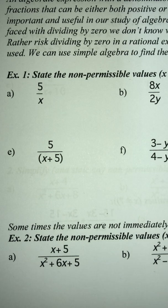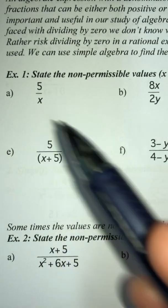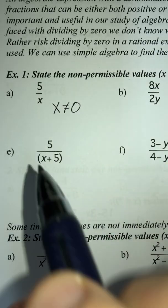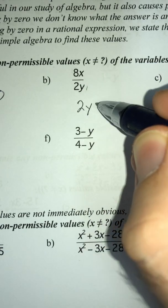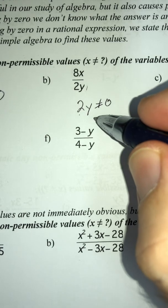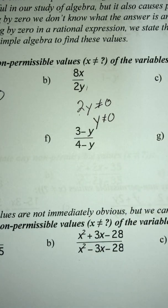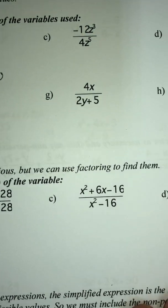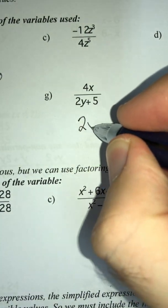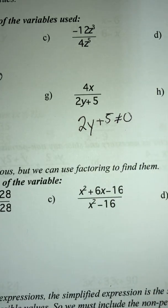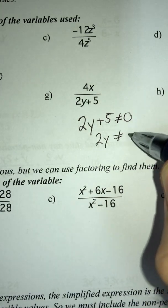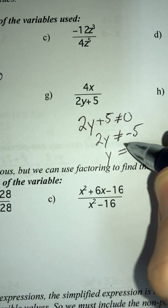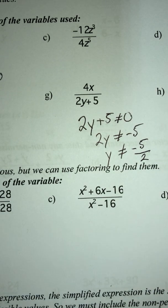A non-permissible value is a value that x, y, z, or whatever variable you're dealing with cannot equal. For instance, x cannot equal zero — I cannot have this denominator equal zero. For 2y in the denominator, 2 is never going to equal zero, so y cannot equal zero. For 2y + 5, that denominator cannot equal zero, so subtract 5 from both sides and divide by 2: y cannot equal negative five over two. These are your restrictions or non-permissible values.